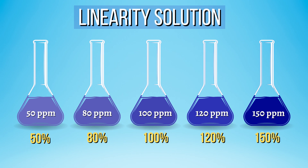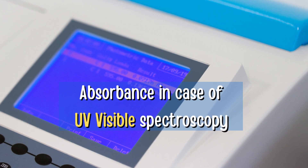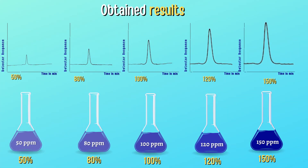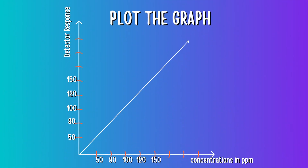For example, let's assume we are preparing five different linearity concentrations: 50 ppm for 50%, 80 ppm for 80%, 100 ppm for 100%, 120 ppm for 120%, and 150 ppm for 150%. The obtained area in HPLC or GC, or absorbance in UV, is 50 for 50 ppm, 80 for 80 ppm, 100 for 100 ppm, 120 for 120 ppm, and 150 for 150 ppm. We can observe that the results increase or decrease linearly with proportionate changes in concentration, and the plotted graph shows a straight line, indicating that the method is linear.